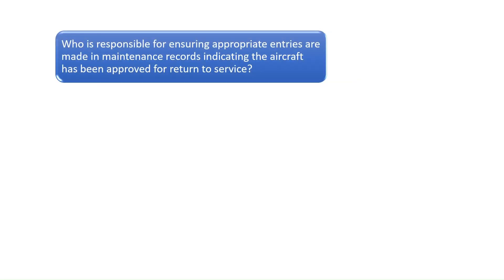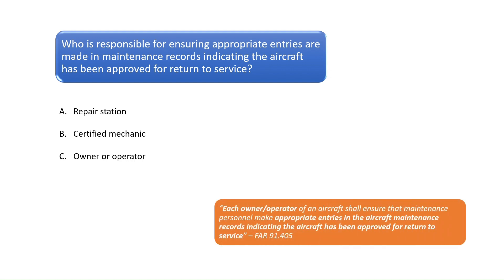Question 1: Who is responsible for ensuring appropriate entries are made in maintenance records indicating the aircraft has been approved for return to service? According to FAR Part 91.405, each owner/operator of an aircraft shall ensure that maintenance personnel make appropriate entries in the aircraft maintenance records indicating the aircraft has been approved for return to service. The correct answer to Question 1 is C.